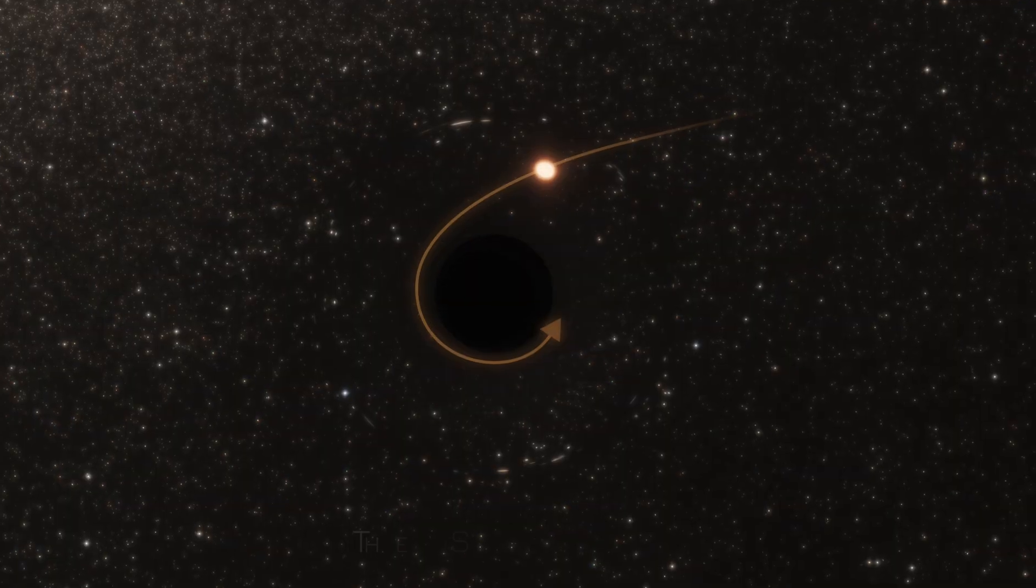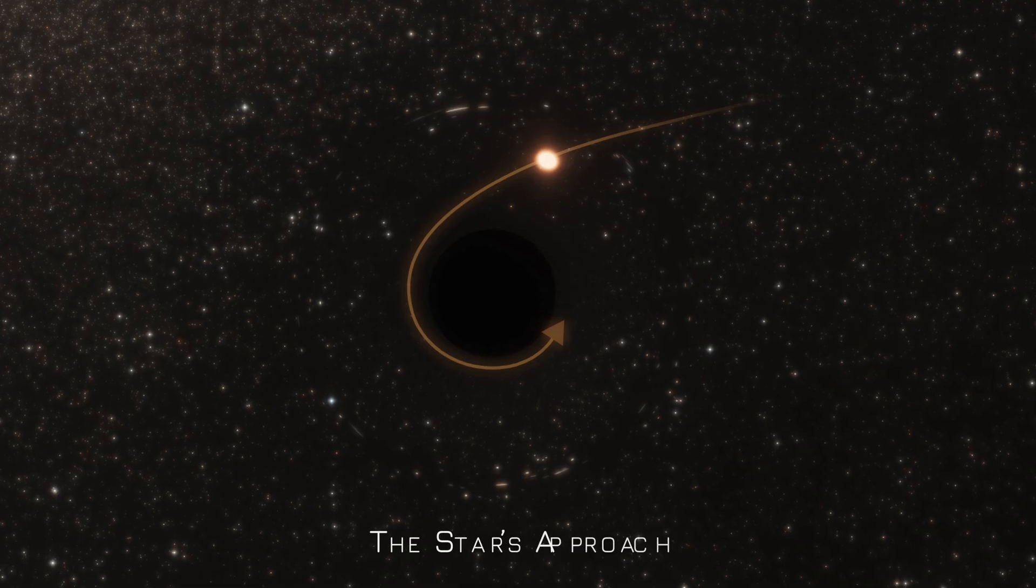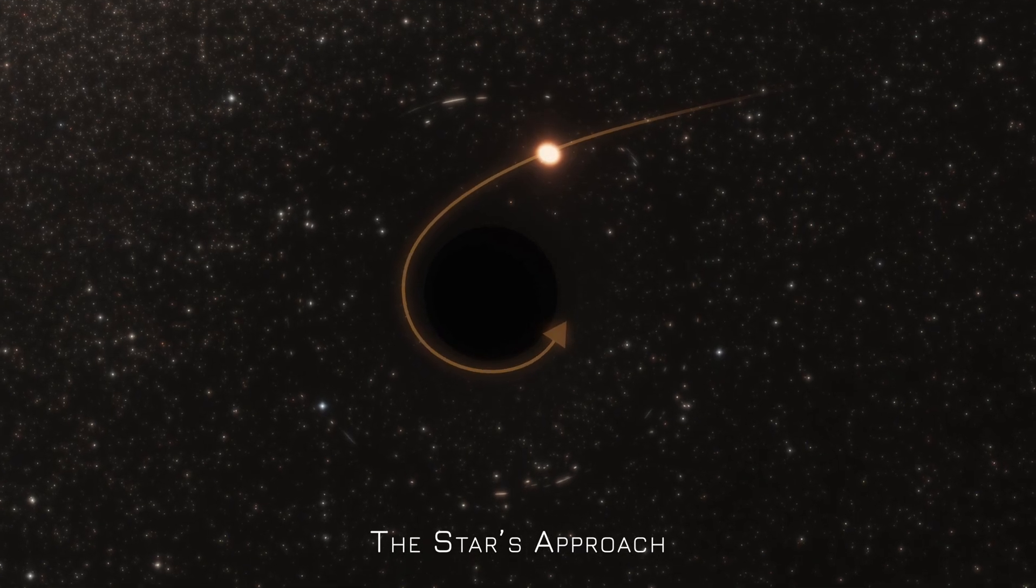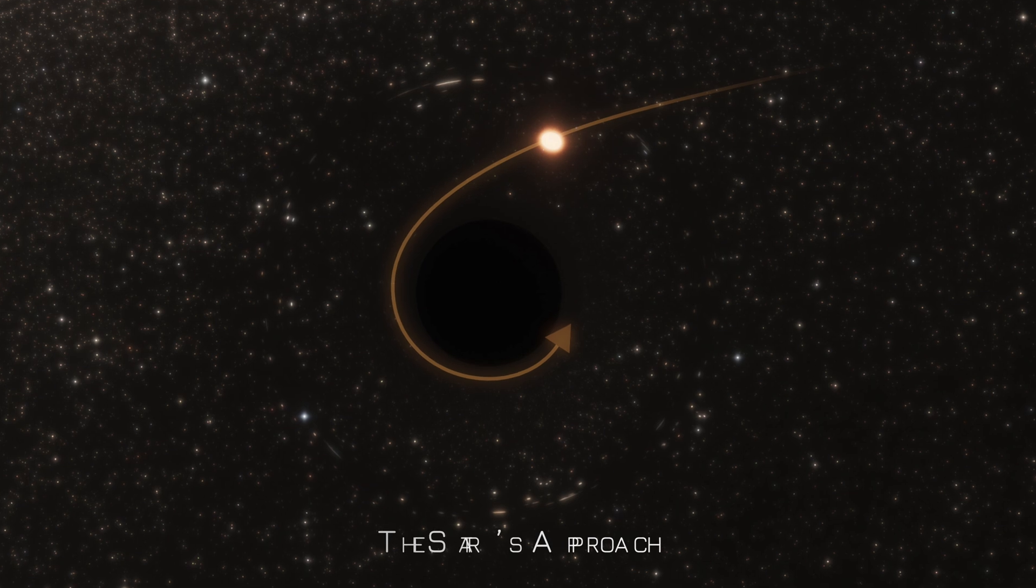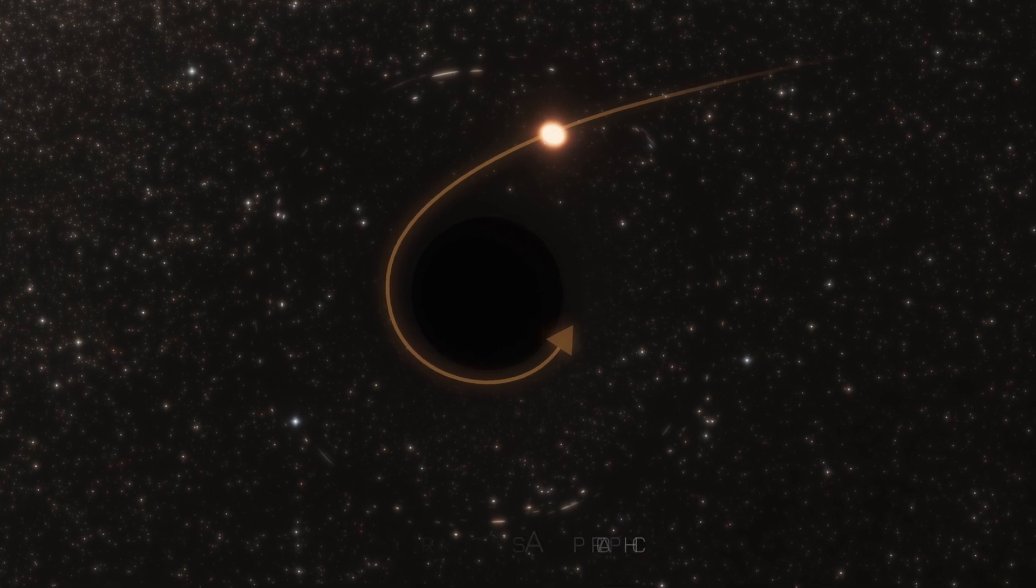The Star's Approach: A wandering star begins its fateful journey. Initially, it follows a gentle, curved path, drawn inevitably closer by the black hole's immense gravitational pull.